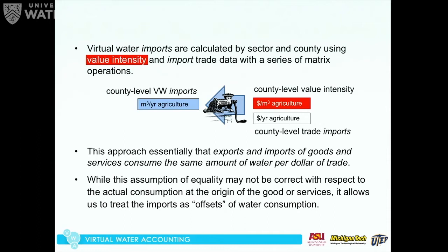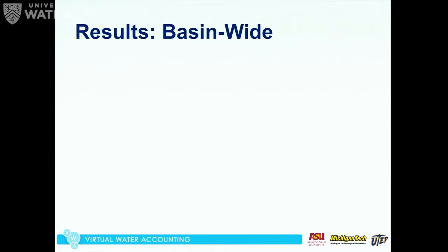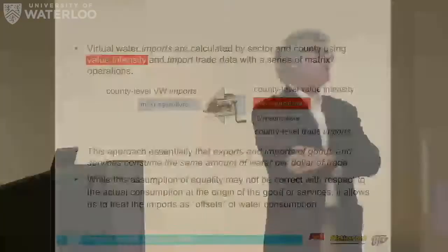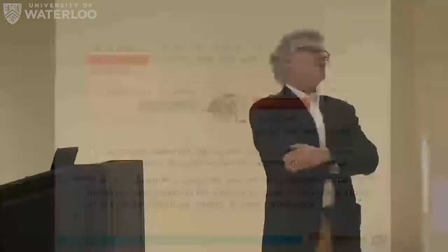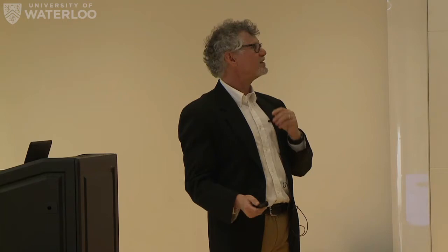The idea is that every kilogram of corn I import supposedly means I did not have to grow that corn and did not have to use the water to grow it. We think of imports as offsets of things we don't have to do — somebody else had to use the water to produce those imported goods. Let's look at some results, first basin-wide.